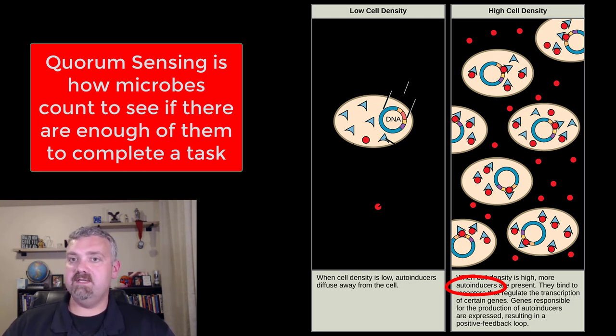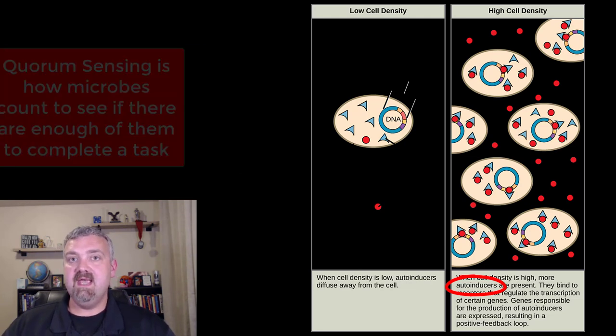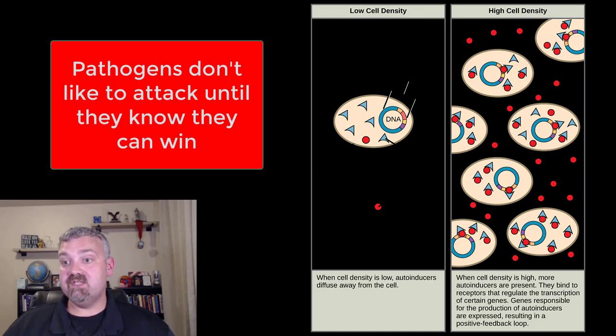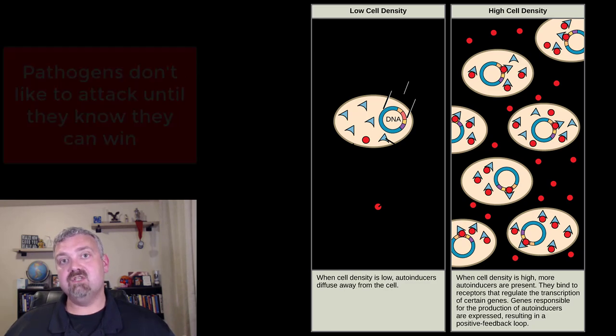But the most important reason to understand quorum sensing is that a lot of pathogenic bacteria will not actually start to produce their virulence factors, the things that make them cause the illness and potentially death, until they know there's enough organisms around to overwhelm the host's immune system. So a dangerous pathogenic organism is not often dangerous until it knows there's enough of its buddies around to actually do anything.